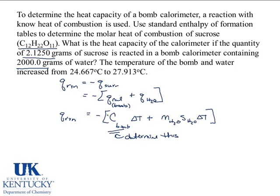Some of them are quite easy. We know the mass of the water. The mass of the water is 2,000 grams. Specific heat of water, we can always look that up, but the specific heat of water is 4.184 joules per gram degrees Celsius. The delta T we know. The delta T is final minus initial, so it's 27.913 minus 24.667 degrees Celsius. So we know that, 3.246 degrees Celsius.